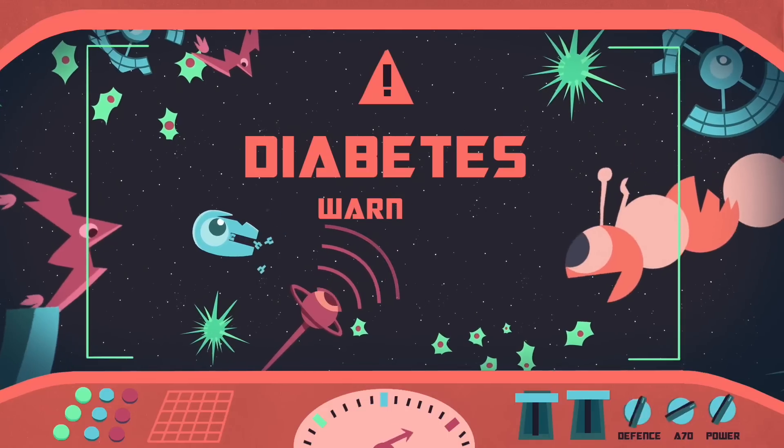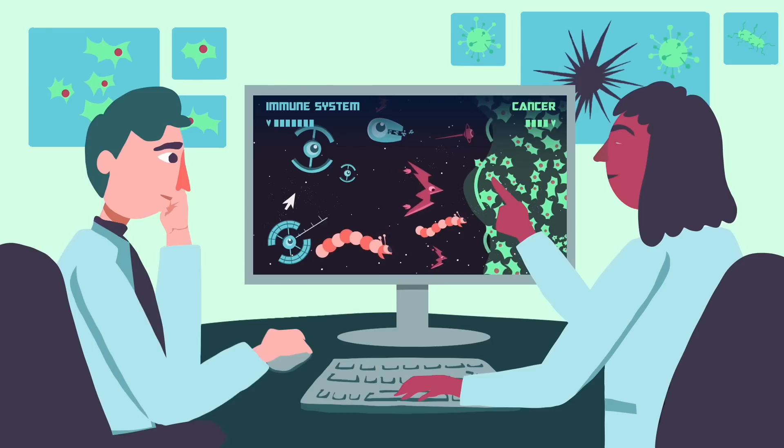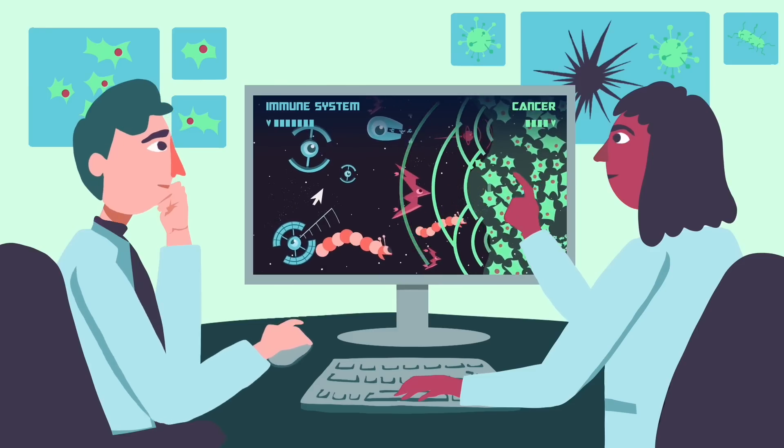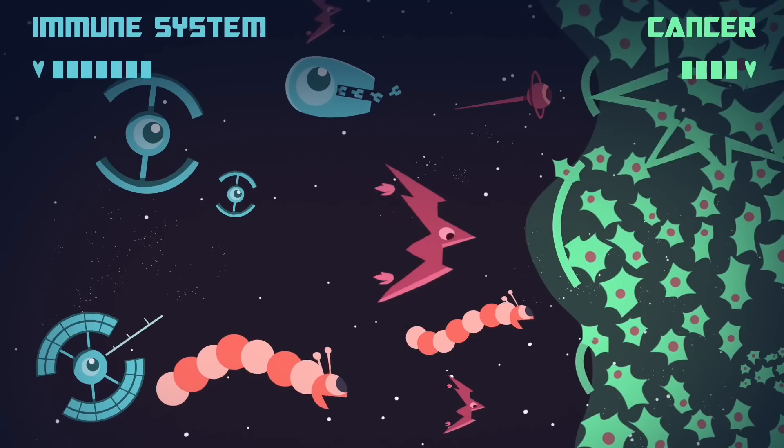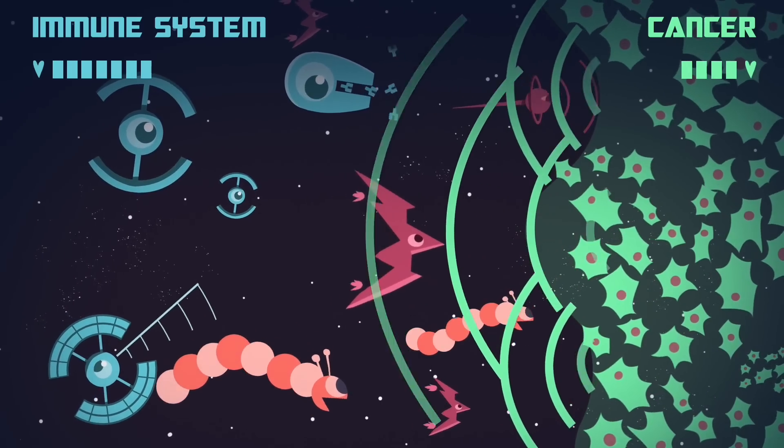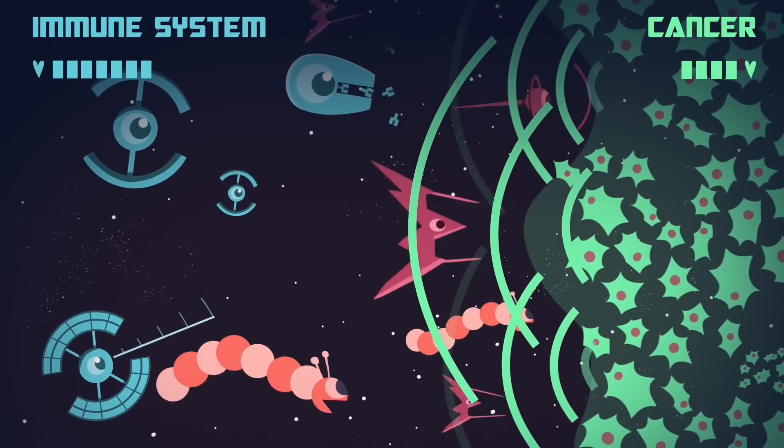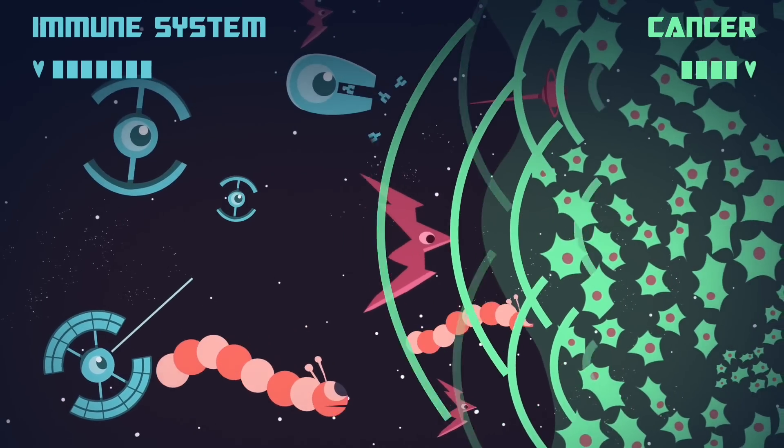Researchers are trying to understand how some cancer cells cleverly confuse the immune system and switch it off, allowing the cancer to grow.